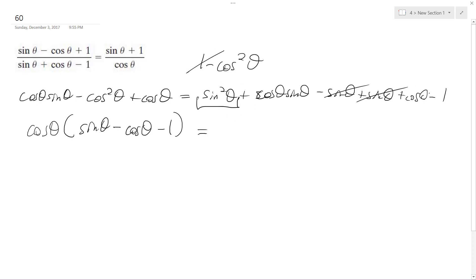So the one cancels out, and we're left with cosine theta, sine theta, minus cosine squared theta, plus cosine theta.